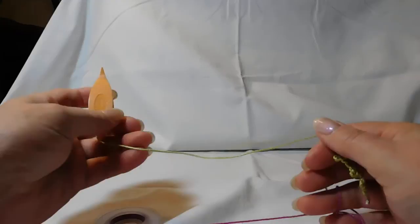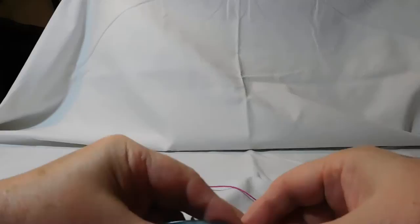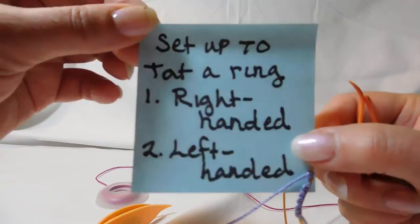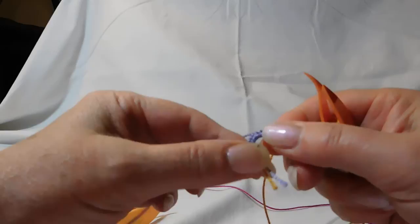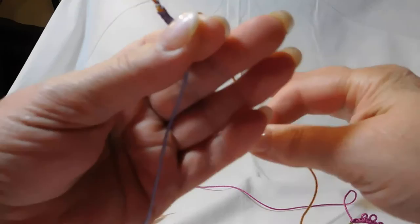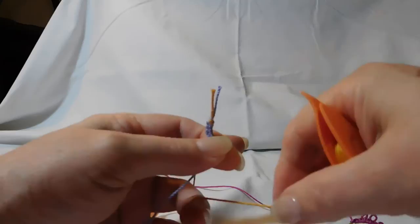Let's try setting up for a ring. We're going to do the stitches the same, but it's what we stitch onto that is going to change. Here's my right hand thread. We're doing setting up to tat a ring, so this is called reverse work. I'm going to rotate it so that the tops of my stitches are facing down.